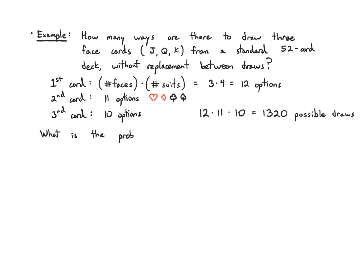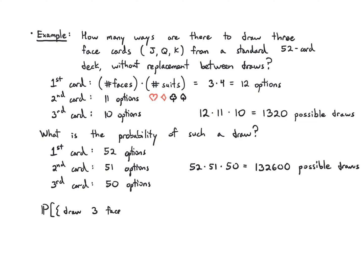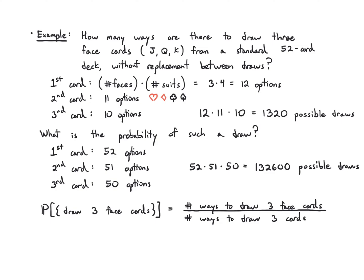If we want to know the probability of drawing three face cards, we also need the total number of ways to draw three cards. For the first card there are 52 available, then 51, then 50, so there are 52 times 51 times 50, which is 132,600 possible draws. To calculate the probability, we divide the number of ways to draw face cards (1,320) by the total number of ways to draw any three cards (132,600), and we get 1,320 over 132,600, which simplifies to 11 over 1,105.